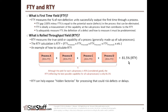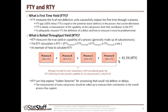By looking at rolled throughput yield, it can help expose any hidden factories that may exist within the process that could affect any risks for defects or delays. This measurement of every sub-process should be rolled up to the measure of their contribution to the overall process that they support.